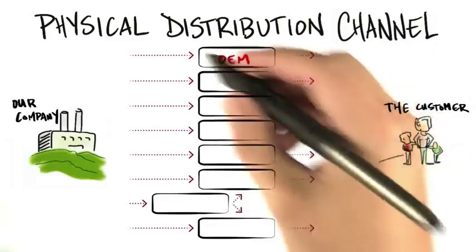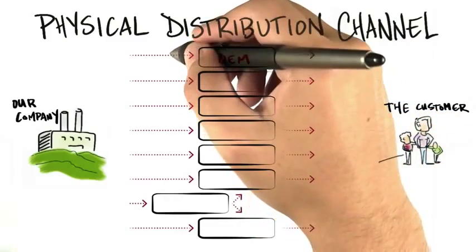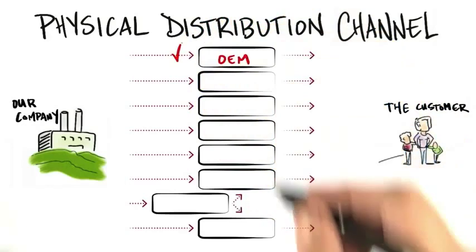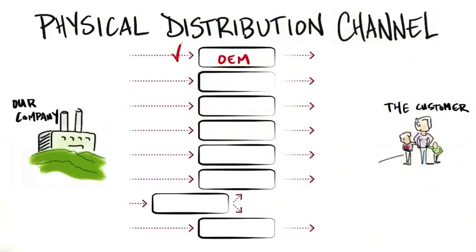So you might be a graphics supplier to Apple or Hewlett Packard. But it's Apple and HP's name and their brand that shows up on the outside of the box. And so while you're making money, it is their marketing and brand.